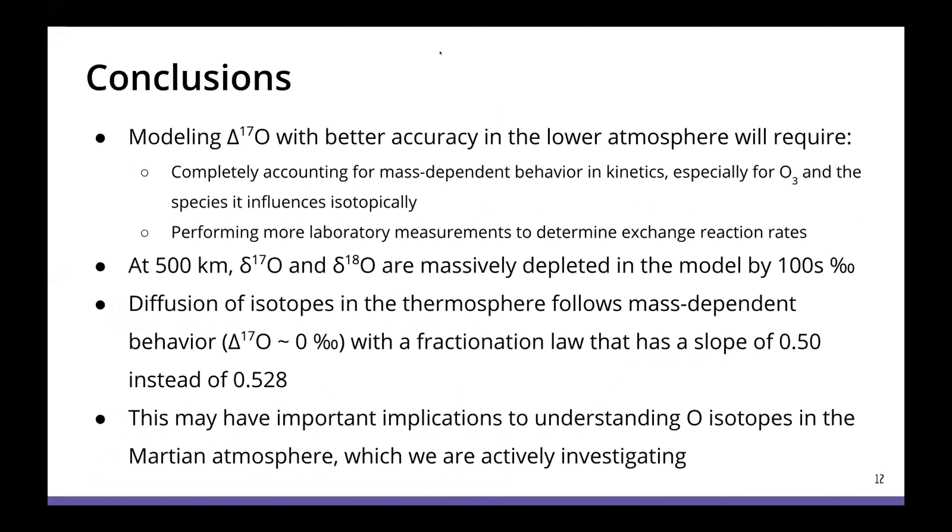So what we concluded is that modeling capital delta 17O for the lower atmosphere of earth will require completely accounting for mass dependent behavior and kinetics, especially for ozone and the species it influences isotopically and performing more laboratory measurements to determine exchange reaction rates. For the upper atmosphere at 500 kilometers, the delta 17O and delta 18O values are massively depleted in the model by hundreds of per mil. The diffusion of isotopes in the thermosphere follows mass dependent behavior with a fractionation law that has a slope of 0.5 instead of 0.528. And this may have important implications to understanding the oxygen isotopes in the Martian atmosphere, which is what we are actively investigating now. Thank you for listening.